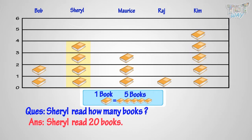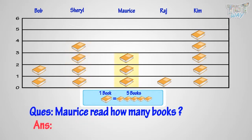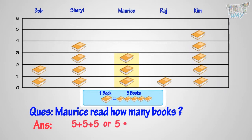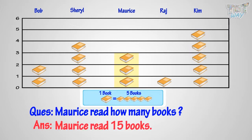Can you tell how many books Maurice read? Let's count. There are three book symbols, and one book means five books. So, Maurice read five plus five plus five, or five times three, equals fifteen. Maurice read fifteen books.